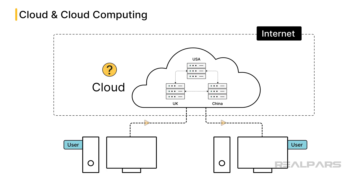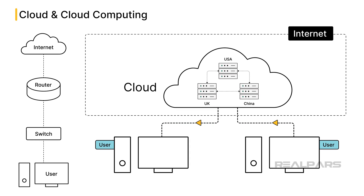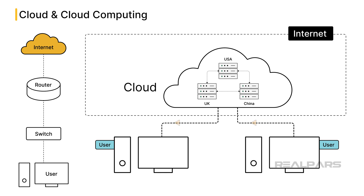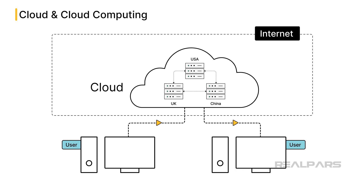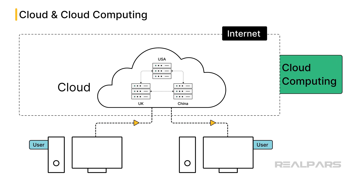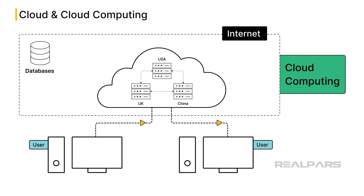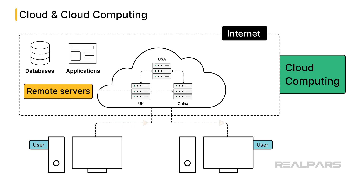Why is it called the cloud? The term cloud originated from early network diagrams, where a cloud-shaped symbol represented the internet. Just as you can't see objects behind an actual cloud in the sky, the cloud symbol in network diagrams hid the complexity of the underlying network, leaving the end-user unconcerned with its inner workings. Users would engage with the services and data they require without understanding the network's intricate details. This abstraction was later adopted to describe modern cloud computing, in which users access data and applications hosted on remote servers via the internet.